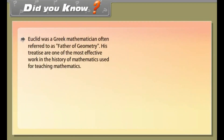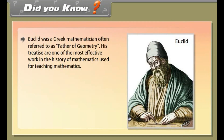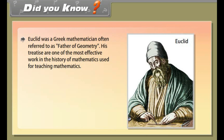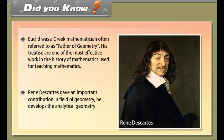Did you know? Euclid was a Greek mathematician often referred to as the father of geometry. His works are one of the most influential in the history of mathematics, used for teaching mathematics. René Descartes gave an important contribution in the field of geometry — he developed analytical geometry.